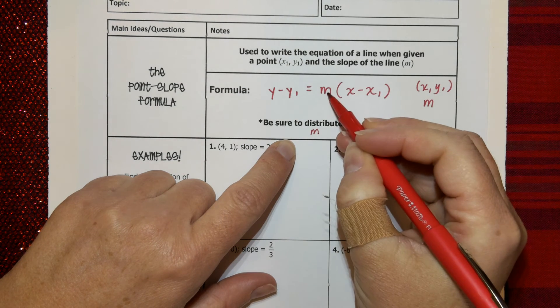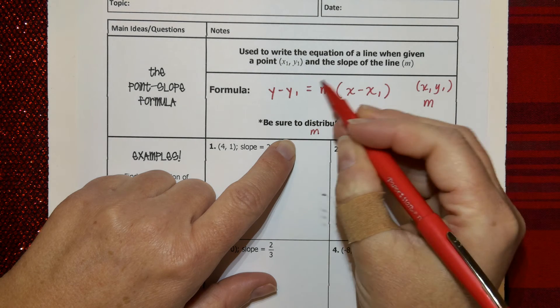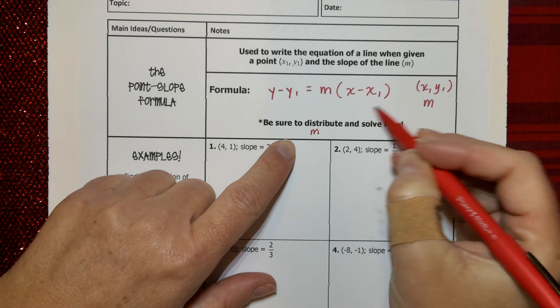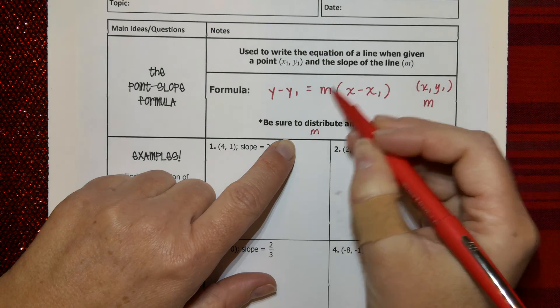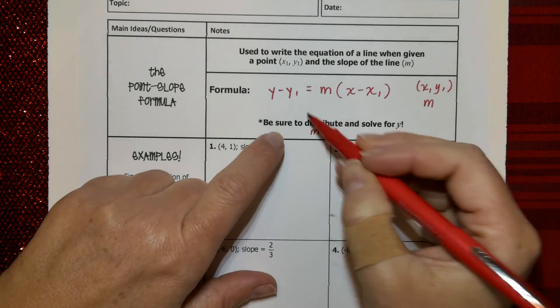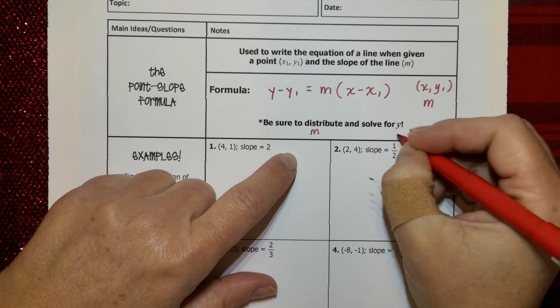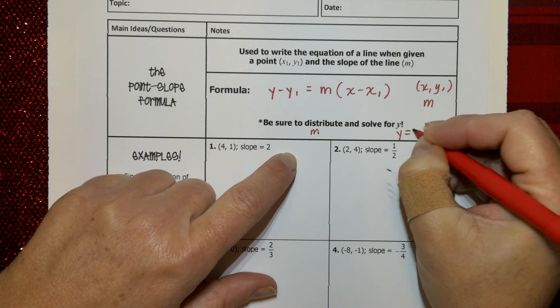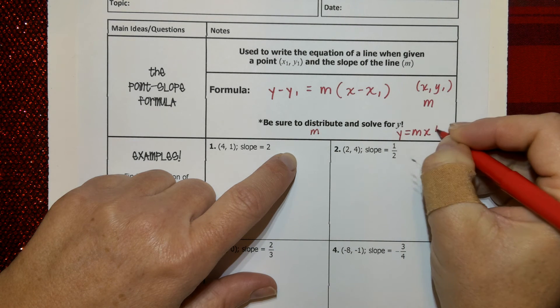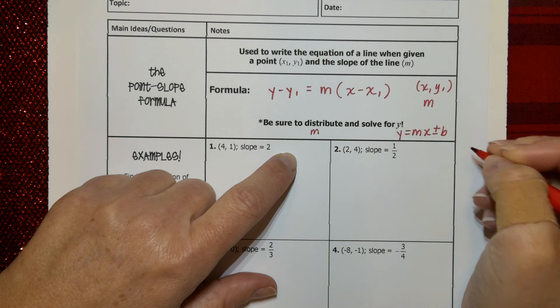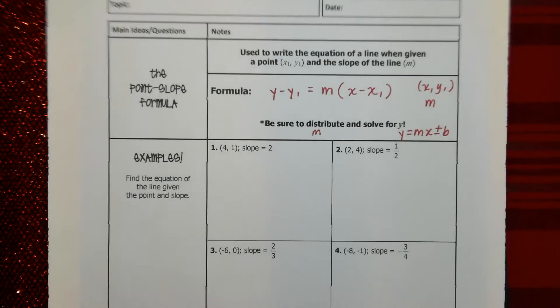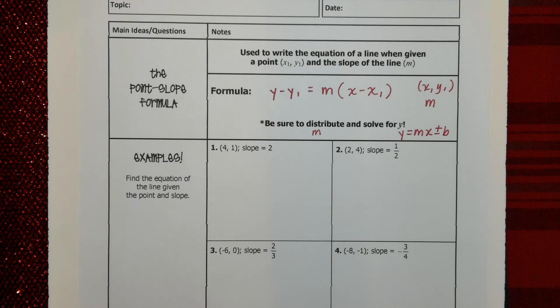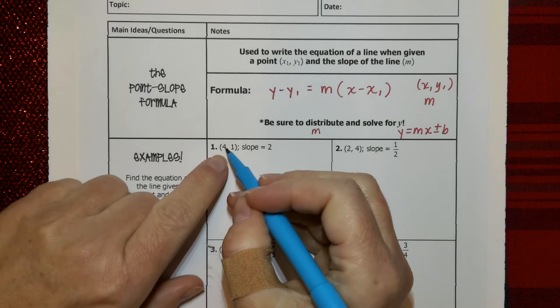So real quick, when they say be sure to distribute, what they mean is distribute the M. This is really the distributive property kind of in disguise right now. It'll look more like the distributive property when we put some numbers here. So you'll be distributing the M, and then you'll be manipulating the equation to solve for Y so that it ends up in this form. You'll see. It sounds really terrible. Honestly, it's not. It's not that bad. Okay, here we go. Let's get started.